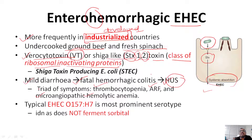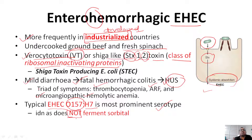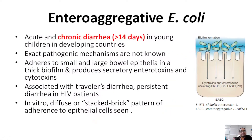The most prominent EHEC serotype responsible for these clinical manifestations is O157:H7. This serotype is easily identified in the laboratory by its inability to ferment sorbitol on Sorbitol MacConkey agar.